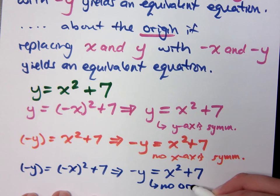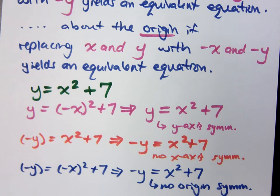is that the same as my original? So there is no origin symmetry. So the only type of symmetry that this graph exhibits is y-axis symmetry, which you should know that because what is the shape of this guy? It's a parabola.